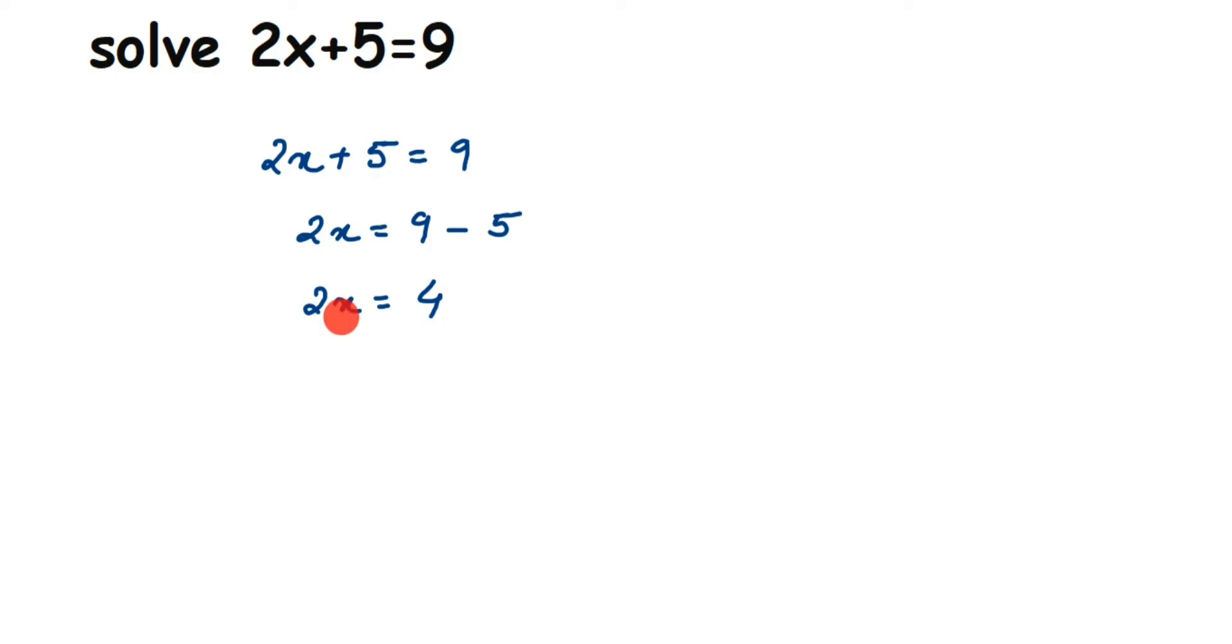So you transpose 2 to the other side, it comes in division. So x will be equal to 4 divided by 2. Now cancel the number: 2 ones are 2, 2 twos are 4, so this is equal to 2. So x = 2.